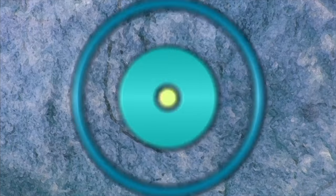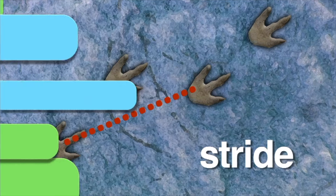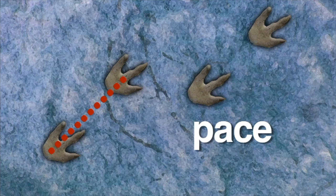How can a scientist find that out? By measuring the stride and pace. Stride is the distance from one footprint to the other footprint made by the same foot. Pace is the distance from one footprint to the next footprint made by the opposite foot. By measuring stride and pace, scientists can determine how fast the animal was walking or running.